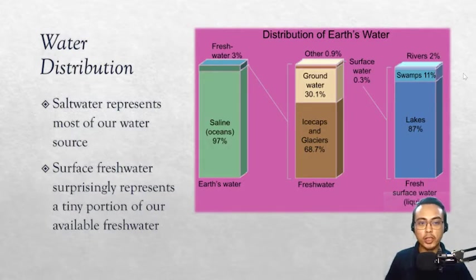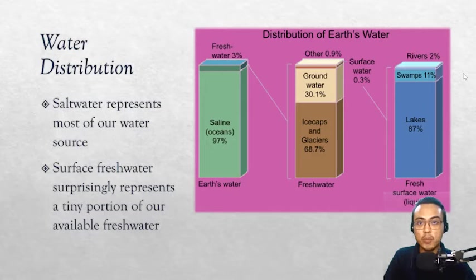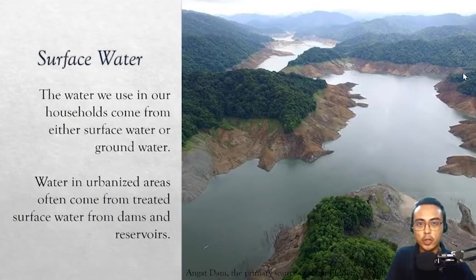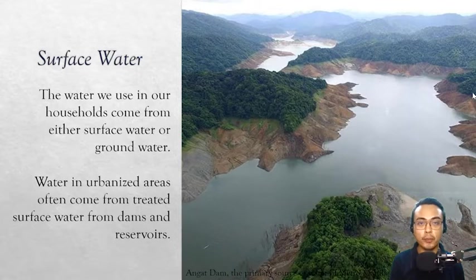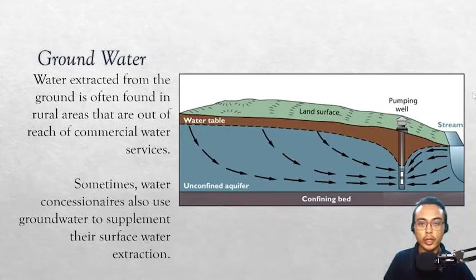With this understanding of water distribution on Earth, it puts into perspective our use of water. If you are used to wasting water just because it's cheap and readily available, always think that our water resources are finite and we may run out sooner than later. In Metro Manila, majority of the water from the faucet comes from the Angat Dam. We are fortunate in the Philippines because we have abundant surface water resources, unlike some countries that rely on groundwater or desalination of salt water. But let's now make the distinction between surface water and groundwater.